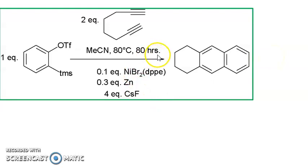So for oligomerization, ring formation, or combination of alkynes and alkenes, you can use a nickel catalyst. REP synthesis and the synthesis of naphthalene derivatives are two examples of oligomerization of alkynes and alkenes using organonickel reagents.